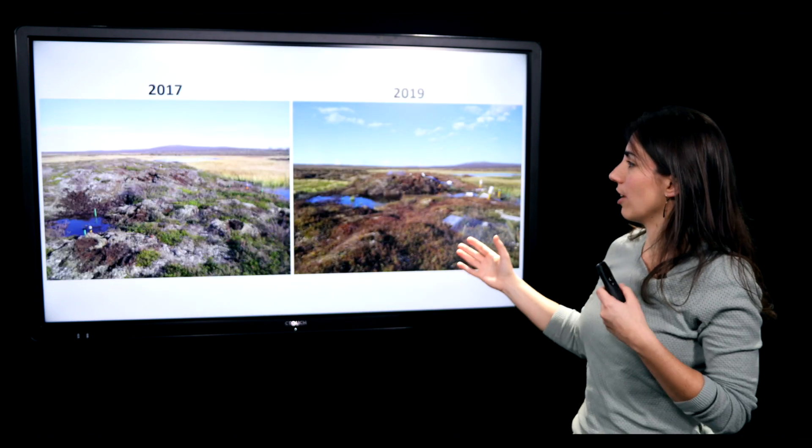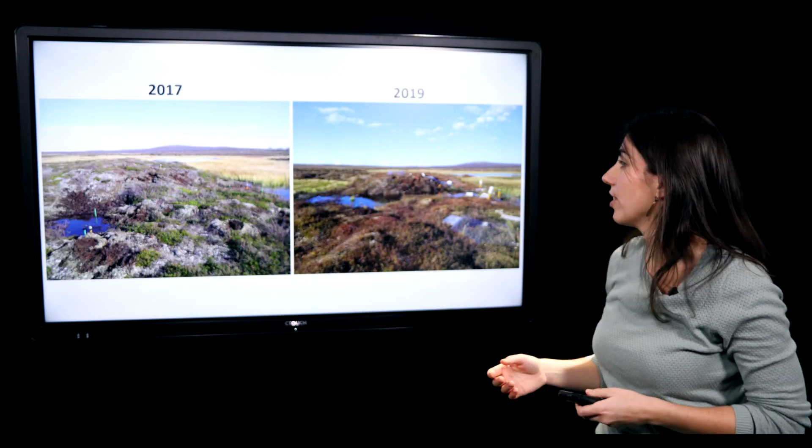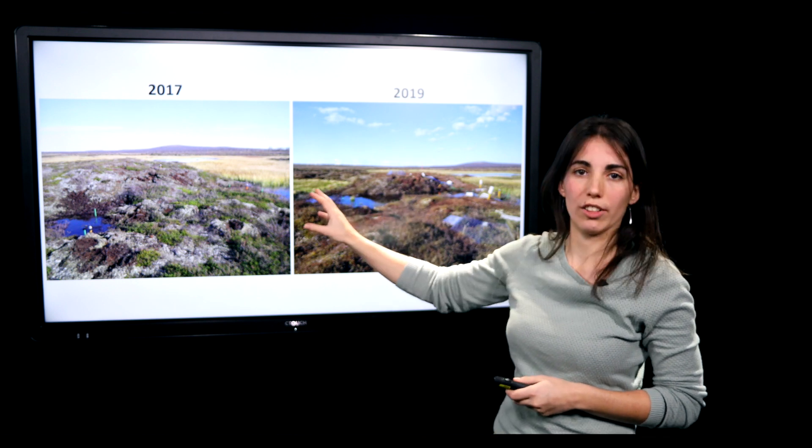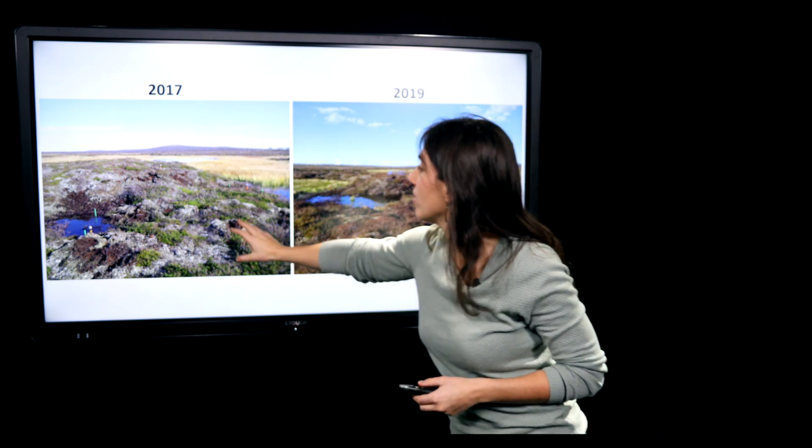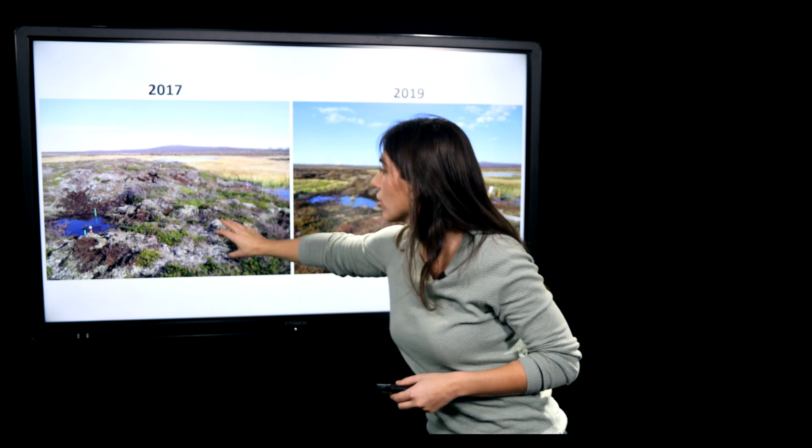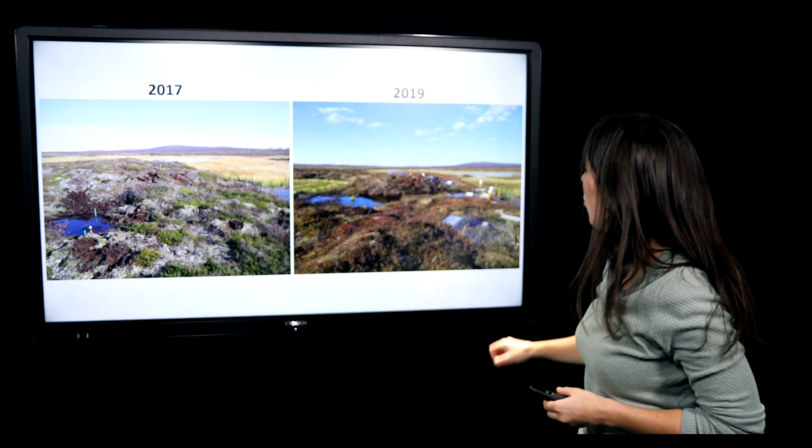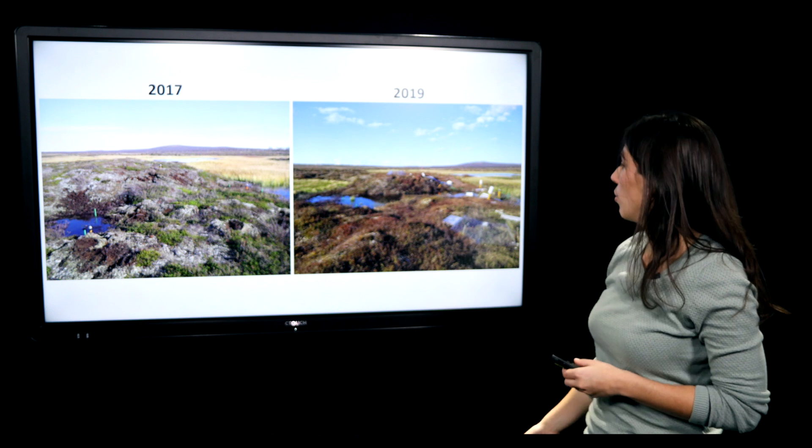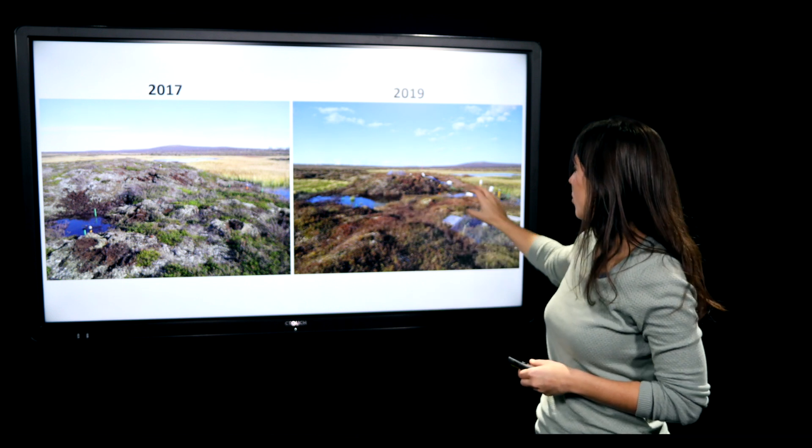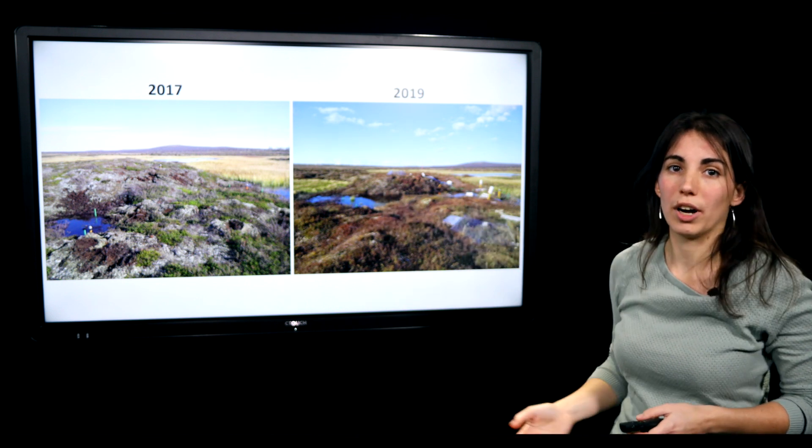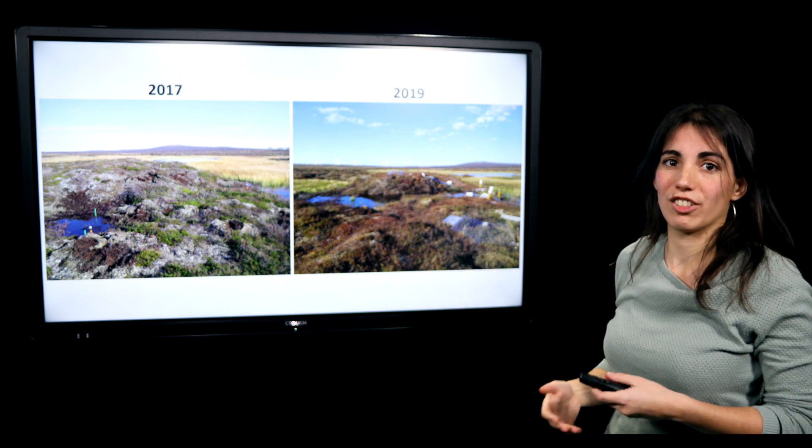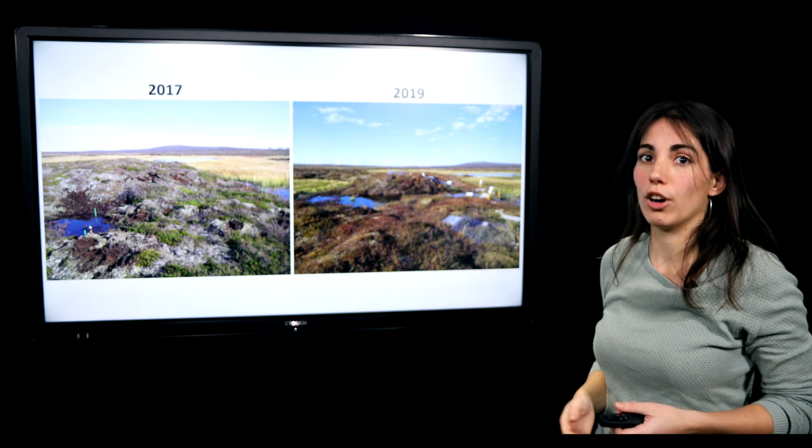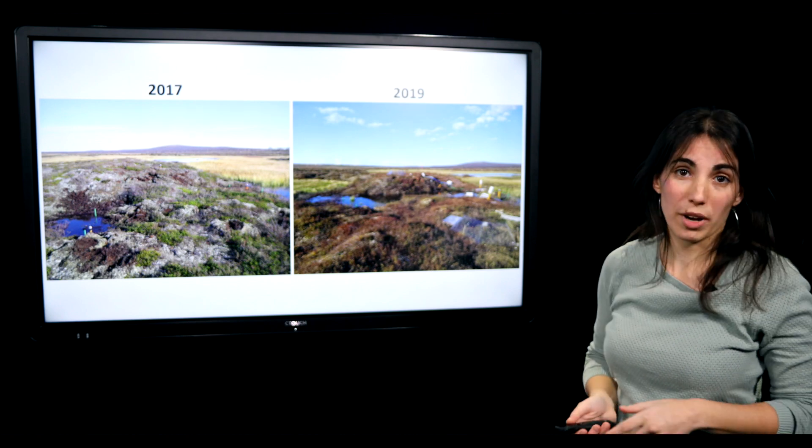To have a look at permafrost thaw in our site, here you have a picture in 2017 when we set up the research site, where you can see the permafrost mounds are still nicely intact. While in 2019 we can already see that there's thaw ponds created by permafrost thaw. So this picture indicates that these processes are actually going on in a short amount of time.